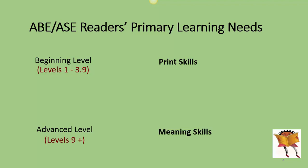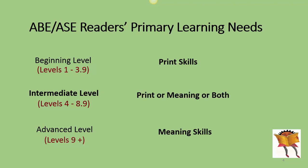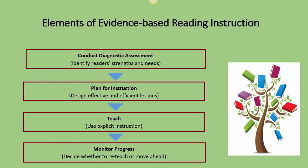For students who are in the intermediate level — the STAR level, grades 4 through 8.9 — they could need the print skills, they could need the meaning skills, or, as is the case for most of our intermediate level learners, they need a combination of both.